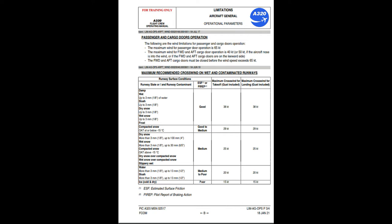Maximum recommended crosswind on wet and contaminated runways. Runway surface conditions — damp, wet up to 3mm (1/8 inch) of water, slush up to 3mm, dry snow up to 3mm, wet snow up to 3mm, frost — estimated surface friction or pilot report of braking action: good. Maximum crosswind for takeoff (gust included): 38 knots. Maximum crosswind for landing (gust included): 38 knots. Runway contaminant: compacted snow, outside temperature at or below minus 15°C.